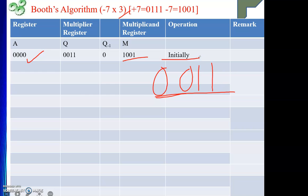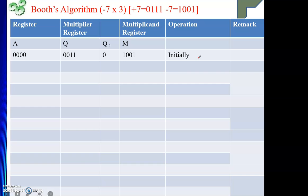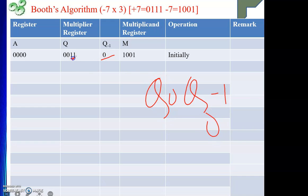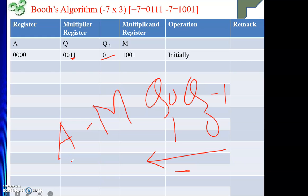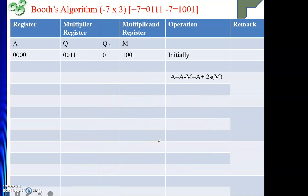If your initial configuration is correct, you are ultimately going to reach a successful completion of the algorithm. Please take utmost care when initializing M, Q, and all registers. Now we start the procedure. We check Q minus one and Q zero. Q minus one is 0 and Q zero is 1 — moving from 0 to 1 means negative — so we perform subtraction: A equals A minus M, which is equivalent to A plus the two's complement of M. The two's complement of M is plus 7, which is 0 1 1 1. Adding 0 0 0 0 plus 0 1 1 1 gives 0 1 1 1.